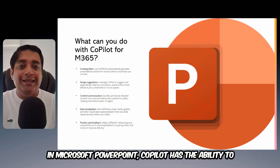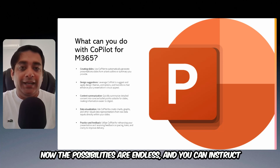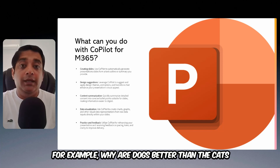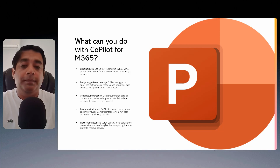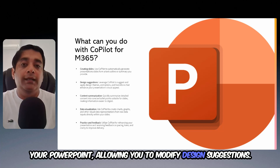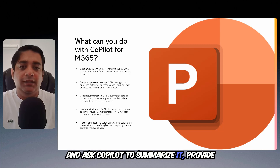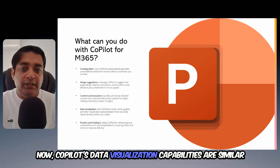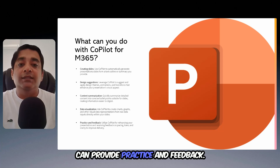In Microsoft PowerPoint, Copilot has the ability to create not just slides but entire presentations. The possibilities are endless and you can instruct Copilot to create a presentation on any topic — for example, why dogs are better than cats, or the economic situation of a particular country. Copilot also integrates with your design view in PowerPoint, allowing you to modify design suggestions. You can even open an existing presentation and ask Copilot to summarize it, provide key takeaways, or answer questions. Copilot's data visualization capabilities are similar to those in Excel.